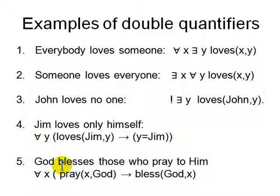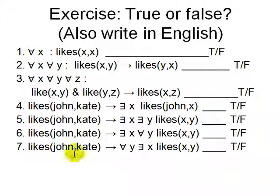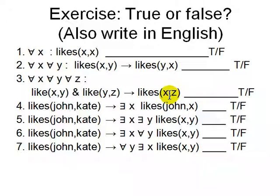Another example: God blesses those who pray to him — For all X, if Prays(X, God) then Blesses(God, X). Now let's look at some true/false questions. For all X, Likes(X, X) — is it true? This is the reflexive property — do you like yourself? If Likes(X, Y), does it mean Likes(Y, X)? That's the symmetric property. And if Likes(X, Y) and Likes(Y, Z), does it mean Likes(X, Z)? That's transitivity. Same thing with 'friend' instead of 'likes' — is your friend's friend your friend?